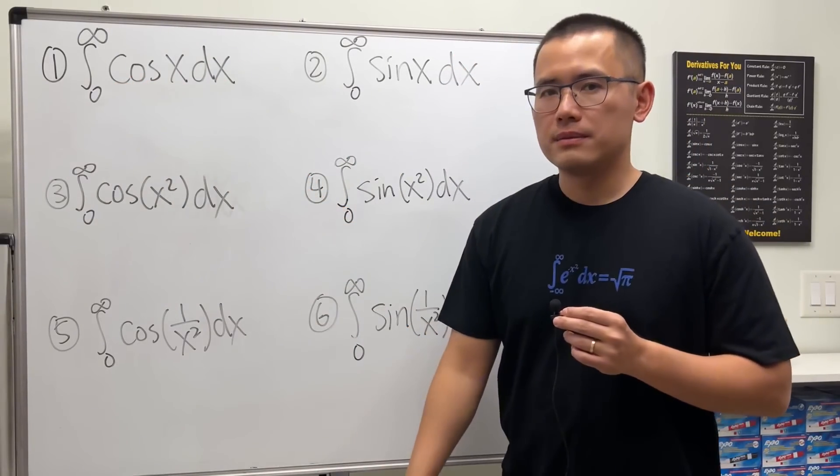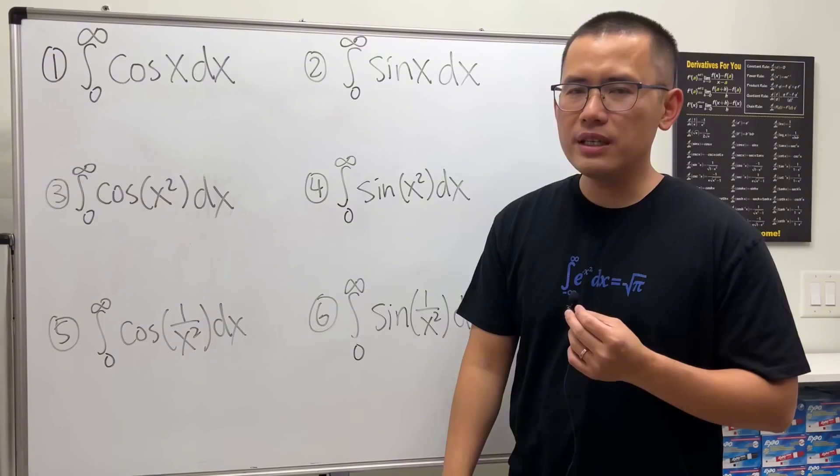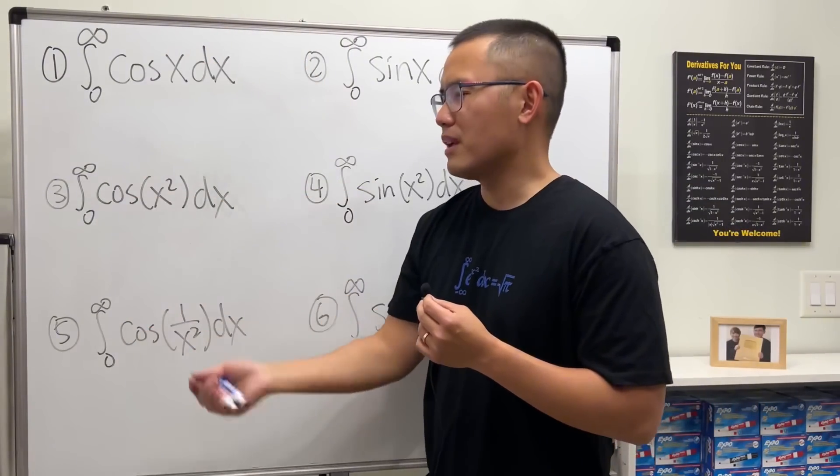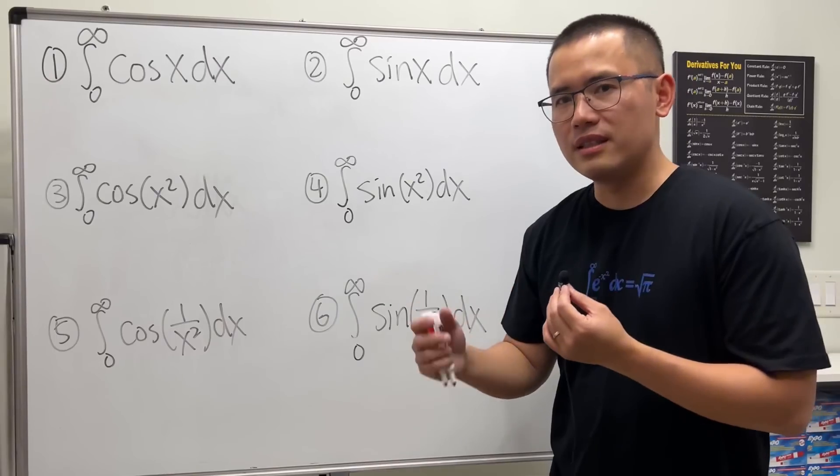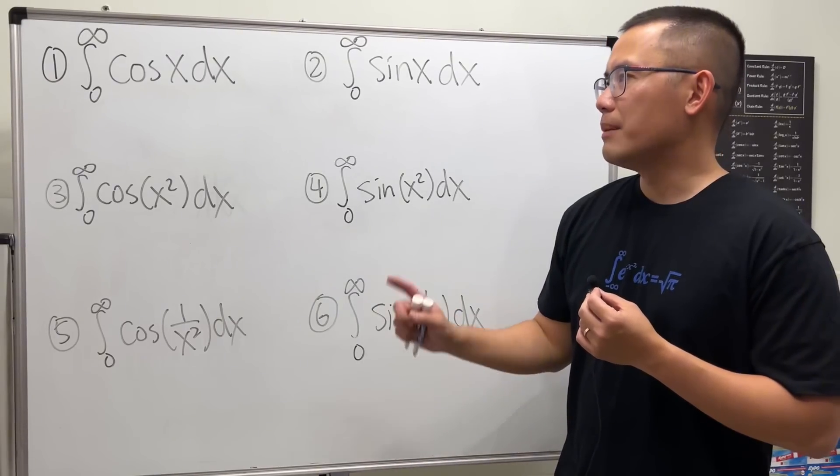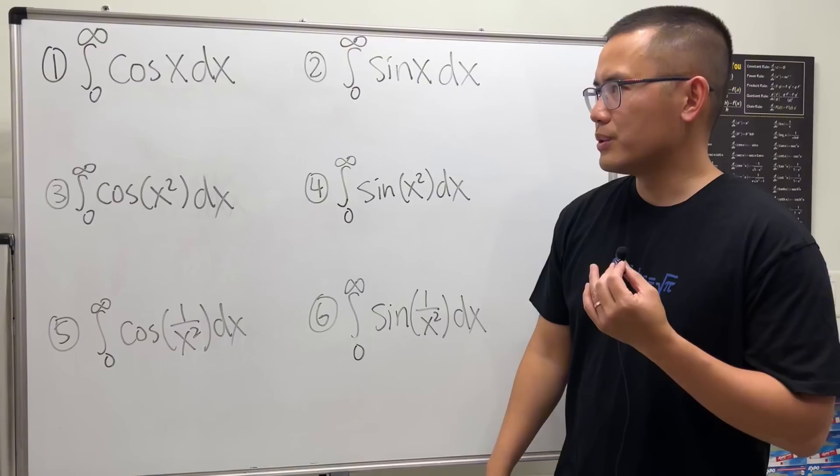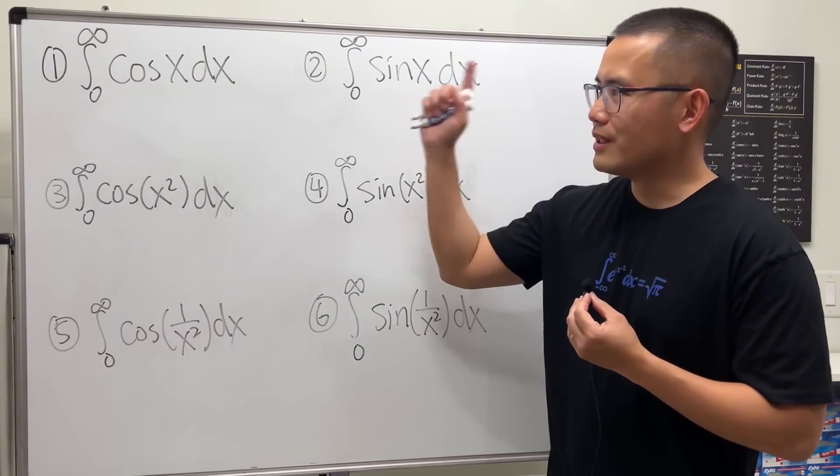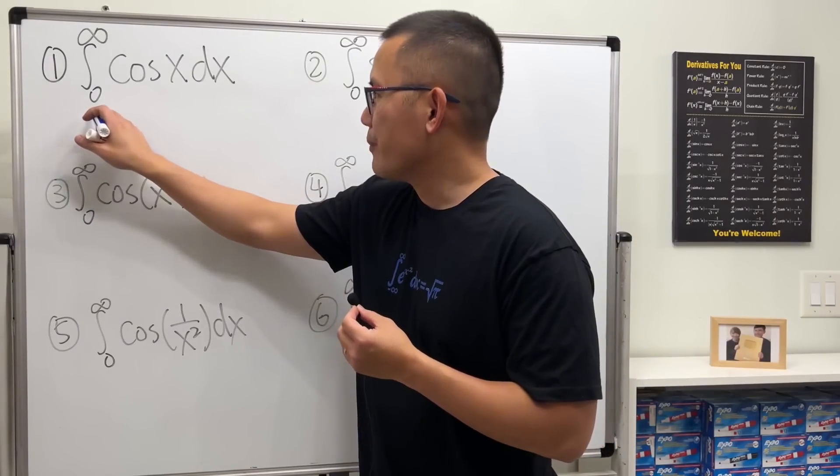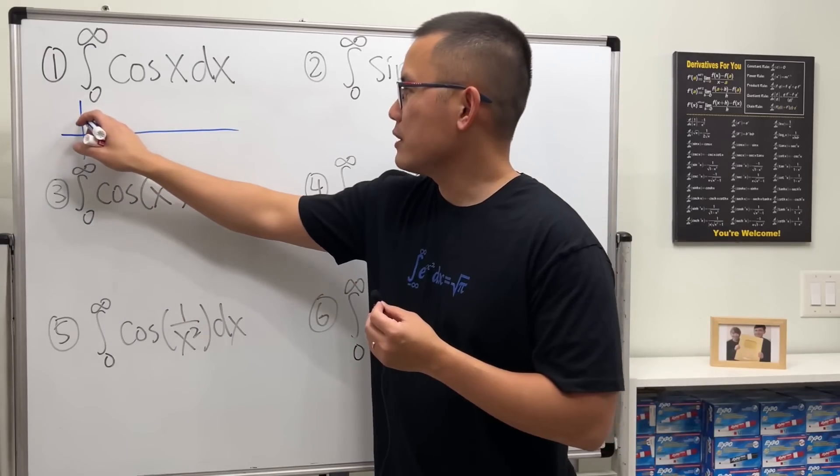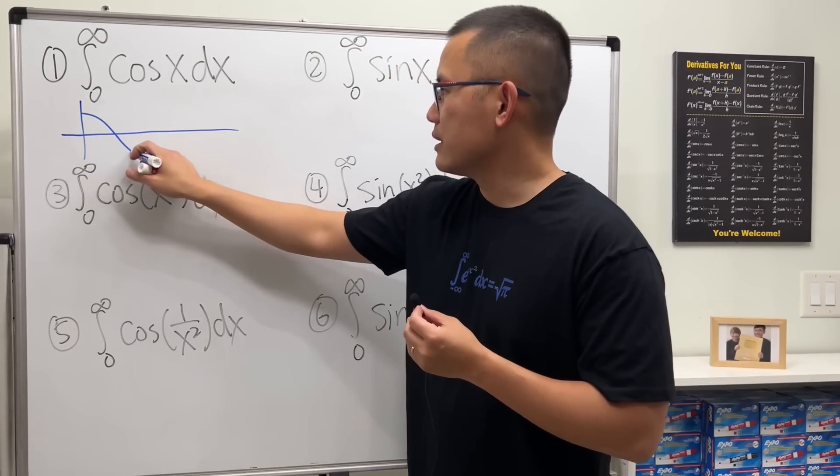If we just have cosine x, of course we could just integrate it and then plug in infinity, plug in 0. Technically, I take the limit. But a better way to solve this is to look at the picture for cosine x. So let me put this down right here for you guys. Cosine starts at 1 and looks like this.